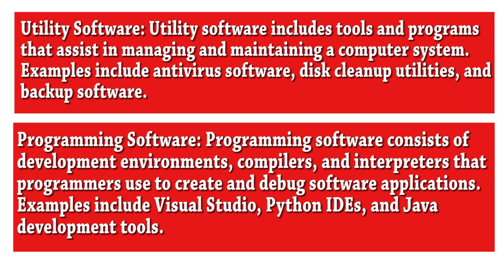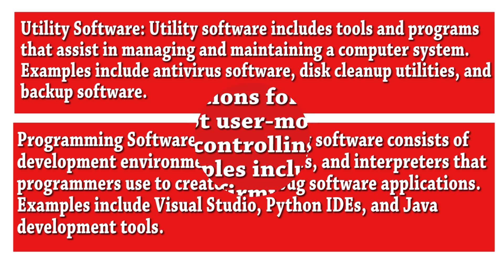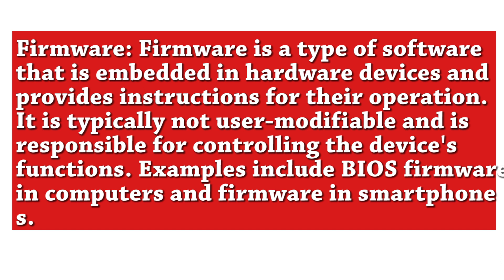Programming software consists of development environments, compilers, and interpreters that programmers use to create and debug software applications. Examples include Visual Studio, Python IDEs, and Java development tools. Firmware is a type of software that is embedded in hardware devices and provides instructions for their operation.